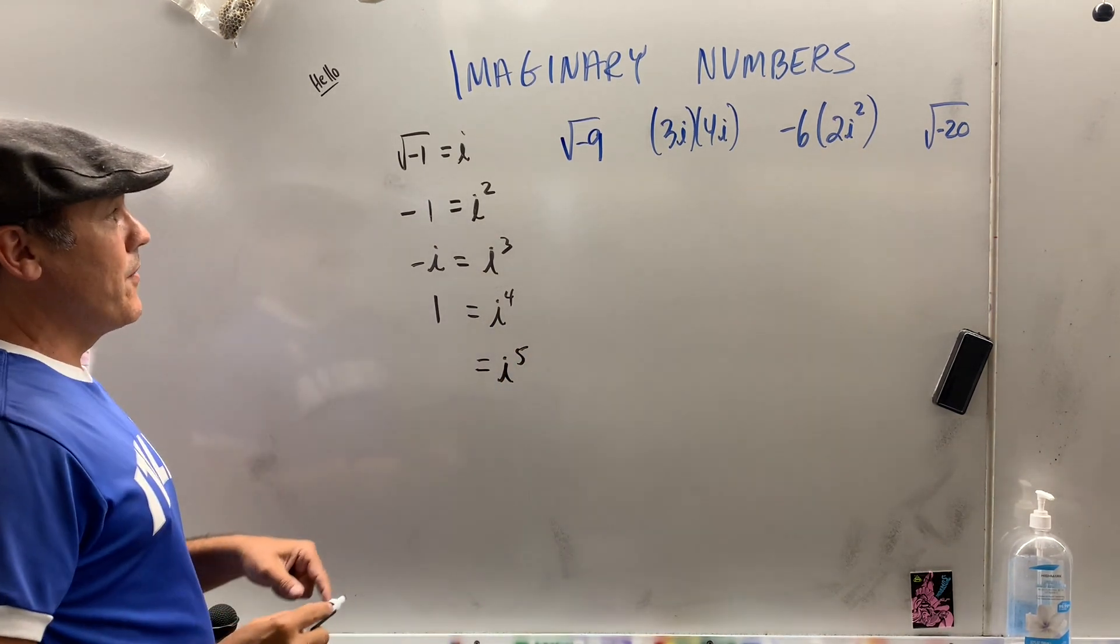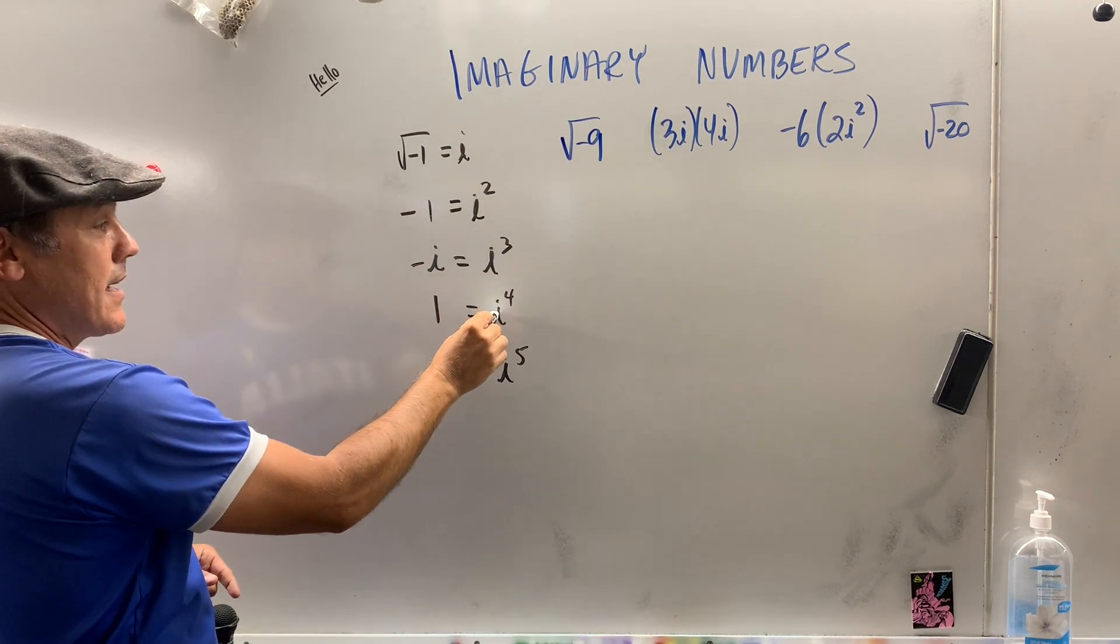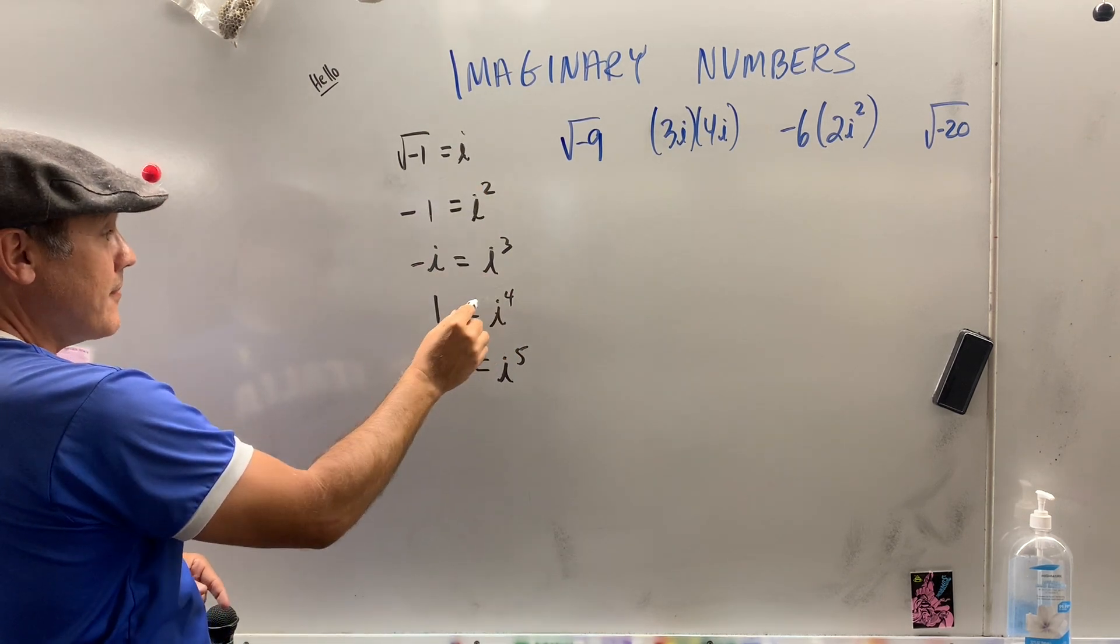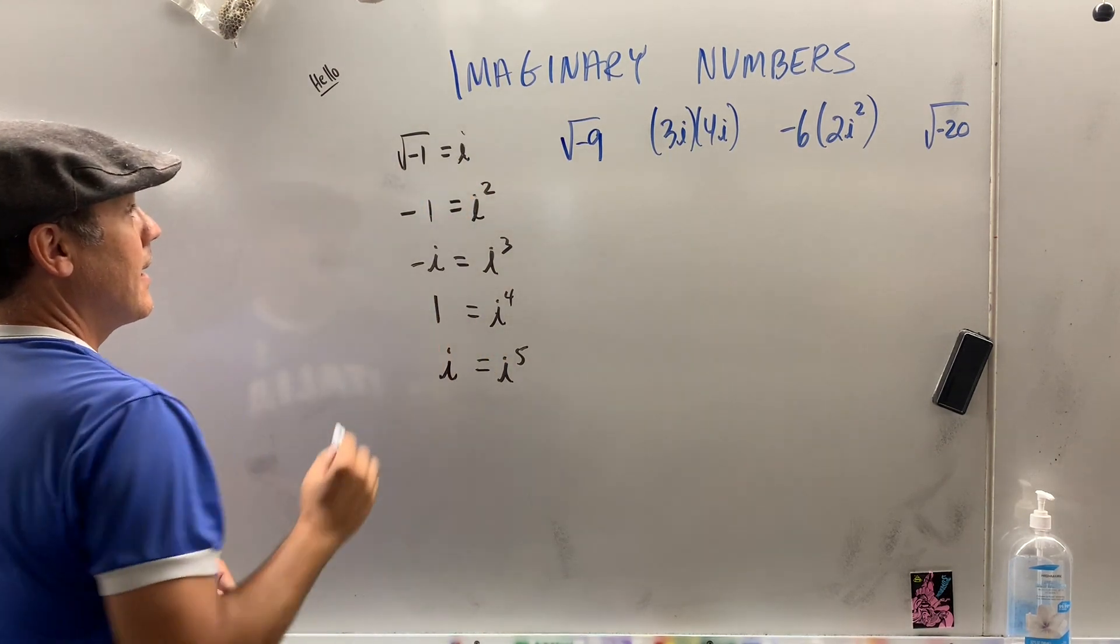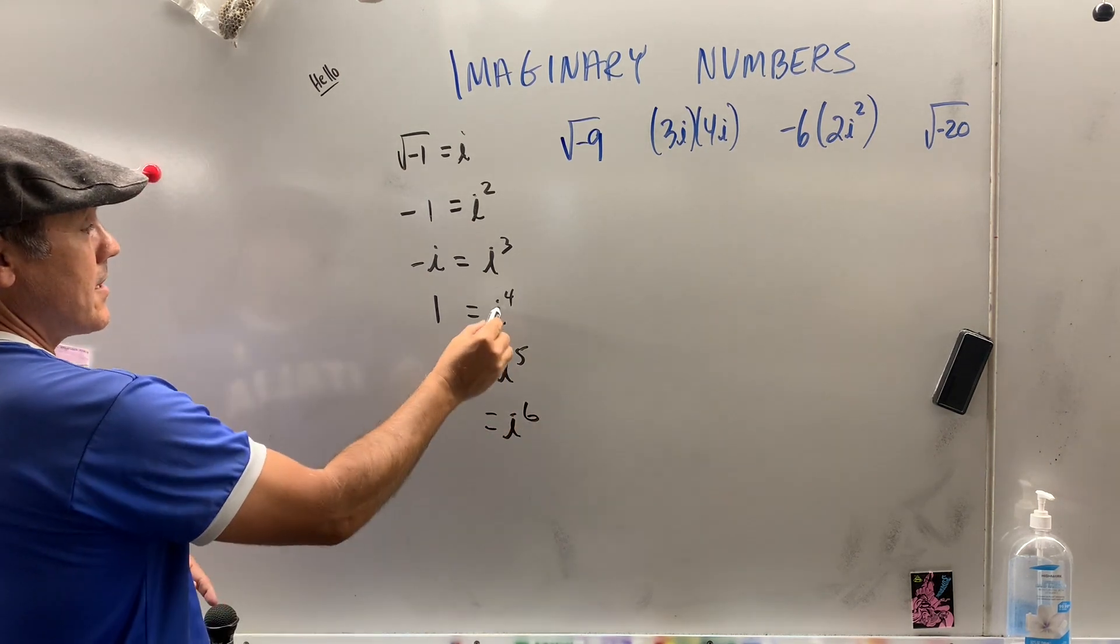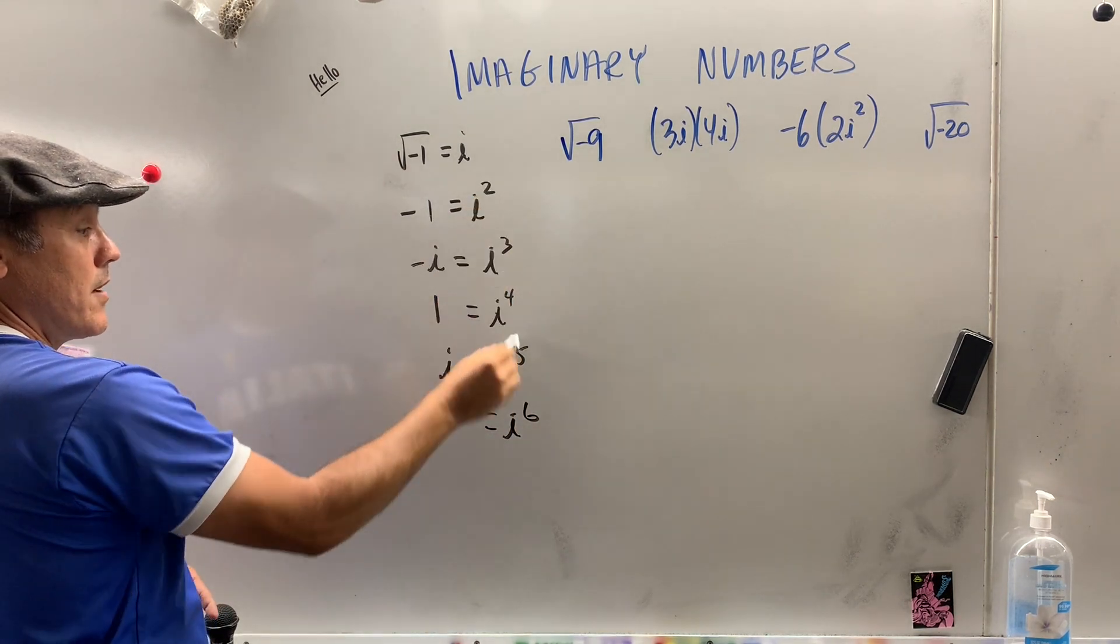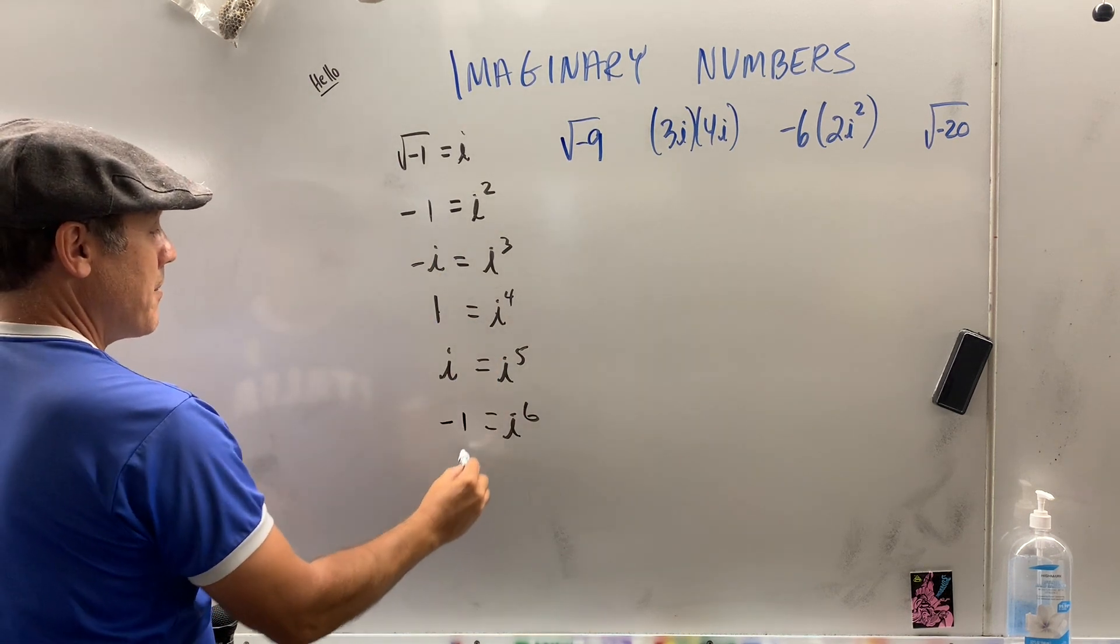Well, let's keep playing this game. What if we said i to the fifth? Well, isn't i to the fifth the same as i times i to the fourth, right? And i to the fourth is 1, so 1 times i is i. What if we had i to the sixth? Isn't that the same as i to the fourth times i², right? i to the sixth? Well, i to the fourth is 1, and 1 times - oh, do you see what's happening?